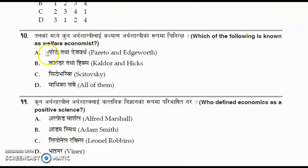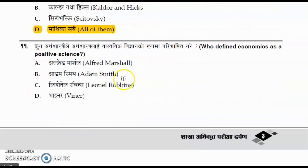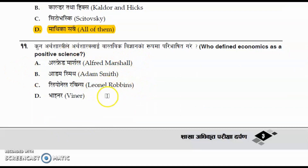Question number ten: which of the following are known as welfare economists? The options include Pareto, Edgeworth, Kaldor, Hicks, and all of them — and the correct answer is all of them. Who defined economics as a positive science? The options are Alfred Marshall, Adam Smith, Lionel Robbins, and Viner. The correct answer is option C, Lionel Robbins.